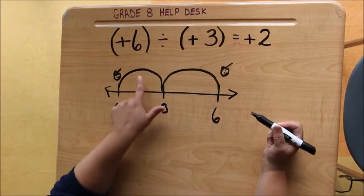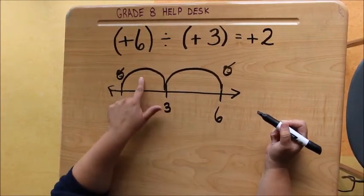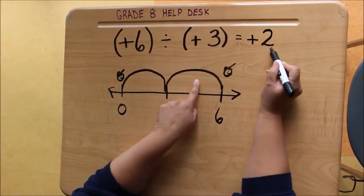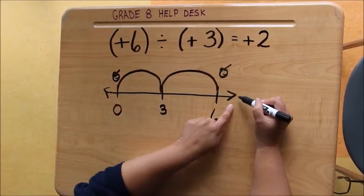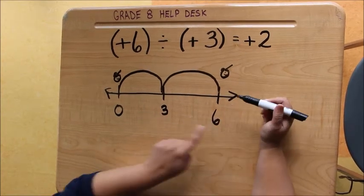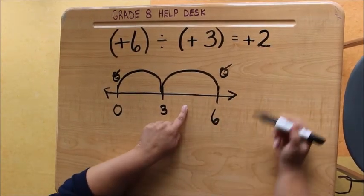Our quotient should be the number of jumps we took. So we took one jump, two jumps. There's two. Our little person jumped forward and is facing the right hand side of the number line, so our quotient is positive. So our number line matches our math.